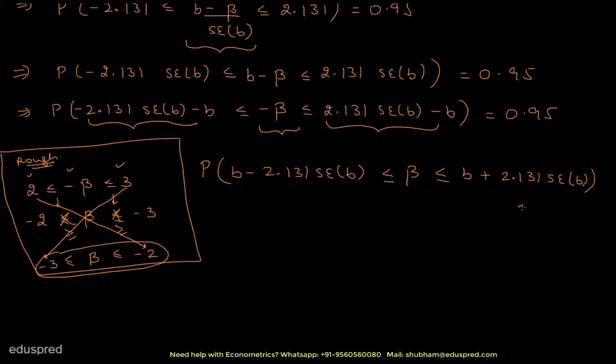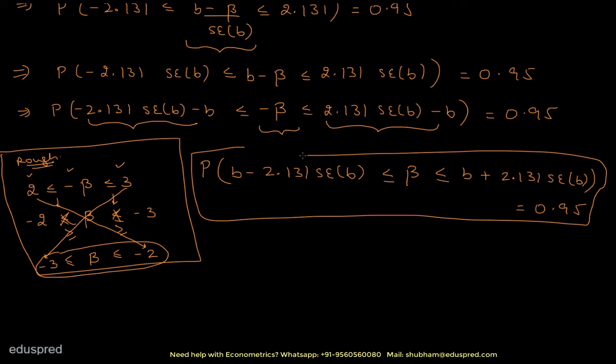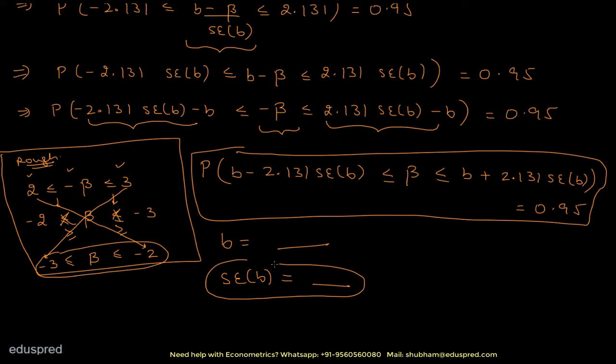We know b but the standard error of b is not given directly. We need to find SE(b) using the information provided, then substitute it into the confidence interval formula.